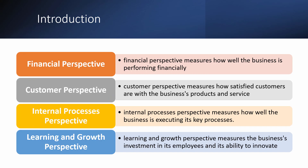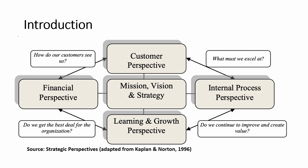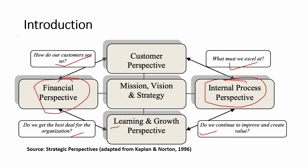Let me explain with a reference template. Here we have a template that gives you perspective on the Balanced Scorecard. For learning and growth, it asks: do we get the best deal for the organization, or do we continue to improve and create value? Second is internal process — how effective are my internal processes to excel our services? Because of effective internal processes, we can see customer success. And if we see customer success, there is an increase in profit, which increases the financial perspective. So customer, learning and growth, financial, and internal process perspectives are all directly connected to the vision and mission.